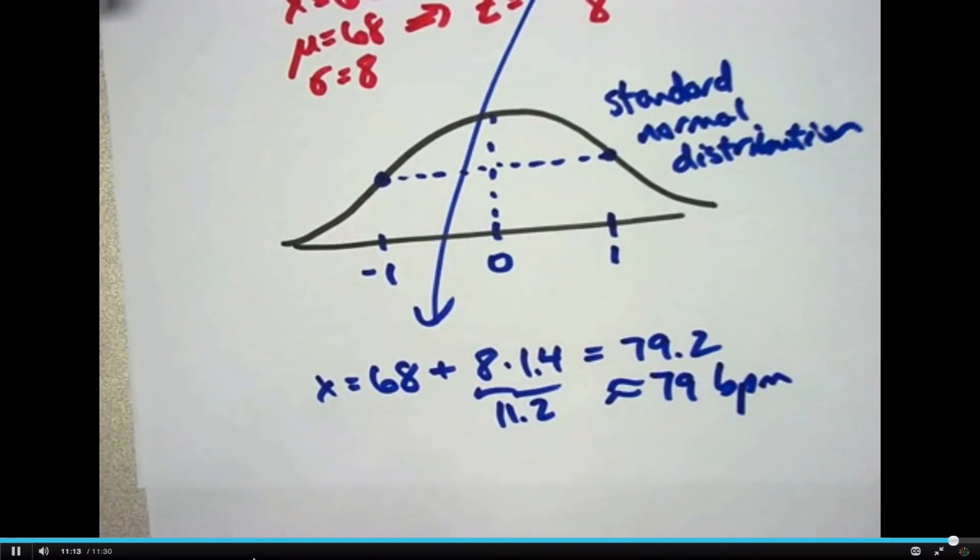Approximately 79 beats per minute. Yes, that is between 76 and 84, like I guessed. If my numbers are accurate, it would be the resting heart rate that's at the 92nd percentile for all heart rates. 92% of all adult males would have a resting heart rate less than that.